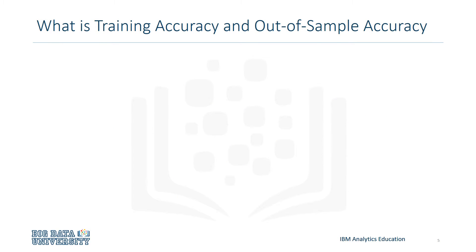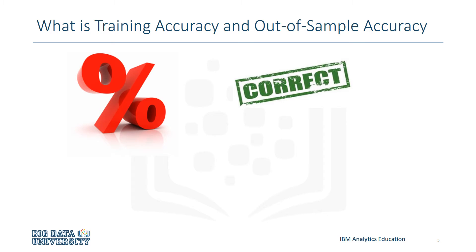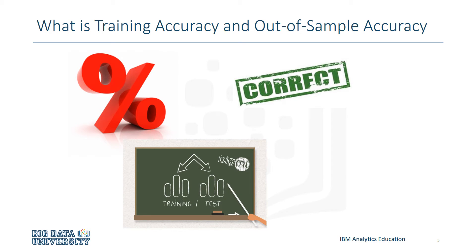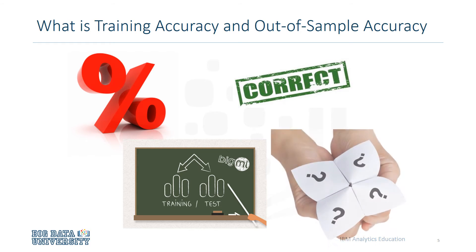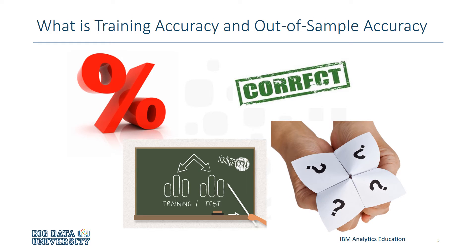Training and testing on the same dataset produces a high training accuracy. Training accuracy is the percentage of correct predictions that the model makes when using the training dataset. However, a high training accuracy isn't necessarily a good thing. For instance, having a high training accuracy may result in an overfit of the data, meaning the model is overly trained to the dataset, which may capture noise and produce a non-generalized model.